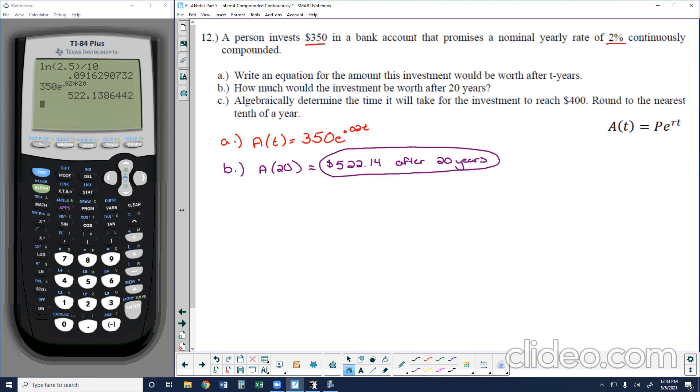Now in part C it says algebraically determine the time it will take for the investment to reach $400. Round to the nearest tenth of a year. We'll probably take it a little further. But we know it's going to be less than 20 because after 20 years, the account value reaches $522.14. We want to know when it's going to reach 400. So 400 would be the amount we want over time. We're still going to use the same equation with the same principle and the same rate. And then we are going to solve for T. So in this case, I would divide both sides by 350. And I'm going to go ahead and put this in a fraction so it's not rounded. This would be 8 over 7 equals E to the 0.02T power. Now to get rid of E, I need to eliminate E and get the variable out of the exponent. I would use a logarithm of base E or the natural log. Then to isolate T, I would have to divide by 0.02. So I take the natural log of 8 over 7 divided by 0.02.